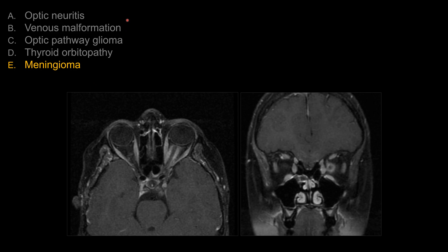What about the other answers that don't work as well in this case? For choice A, optic neuritis, there should be involvement of the optic nerve itself. In the acute phase, you should see expansion of the optic nerve and avid enhancement — and you clearly don't see that. Remember, they can ask you about optic neuritis and its association with MS on board exams.